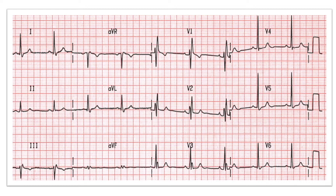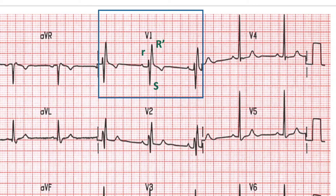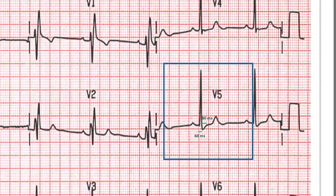Coming back to our ECG, we shall now apply these criteria. QRS duration is more than 120 milliseconds — it is almost 160 milliseconds here. There is an RSR prime pattern in leads V1 as well as V2. In lateral leads V5 and V6, the S wave is of greater duration than the R wave, and the S wave is greater than 40 milliseconds in duration. R wave duration is 60 milliseconds and S wave duration is 80 milliseconds, so the S wave is broader than the R wave. Note that we are looking at duration of R and S waves, not at the amplitudes.